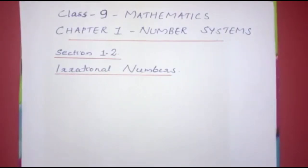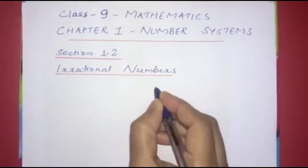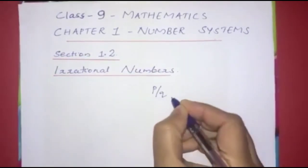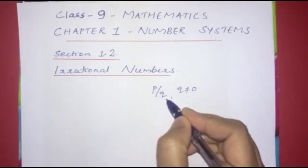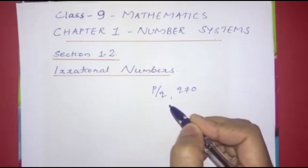Chapter 1: Number Systems. We call rational numbers, natural numbers, whole numbers, integers, and rational numbers. We also have irrational numbers. What are rational numbers? In the case of rational numbers, we write them as P by Q, where Q is not equal to 0. If P and Q satisfy this, we call it a rational number.